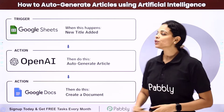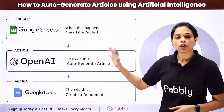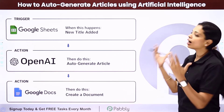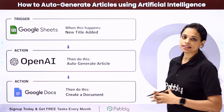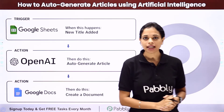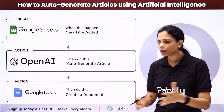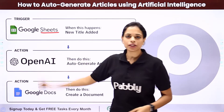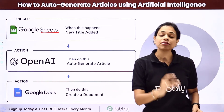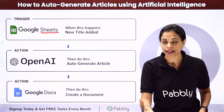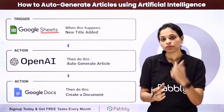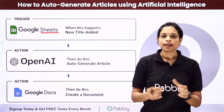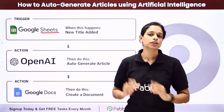In this video, we are going to see how to auto-generate articles using artificial intelligence. So let's say you have certain titles which are part of your Google Sheet or any other spreadsheet. Every time a new title is added there, you want that automatically an article should be generated.